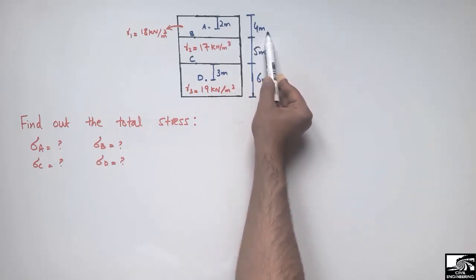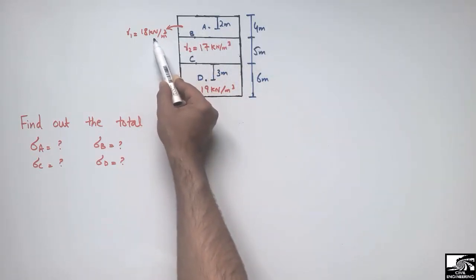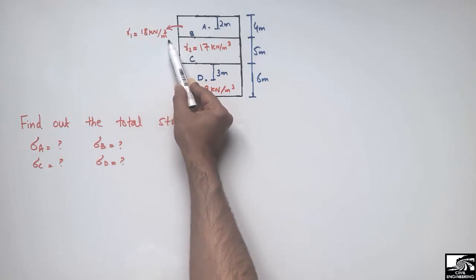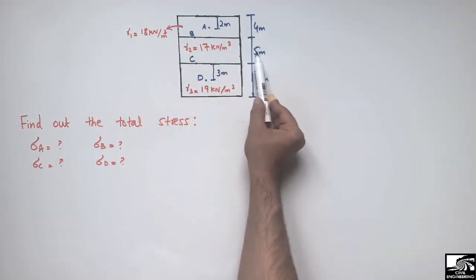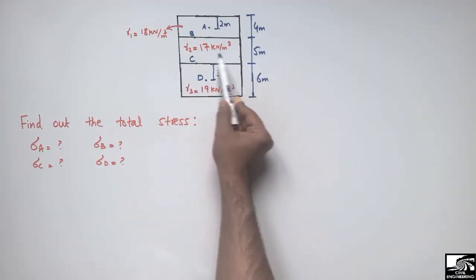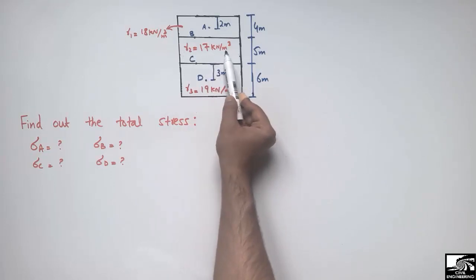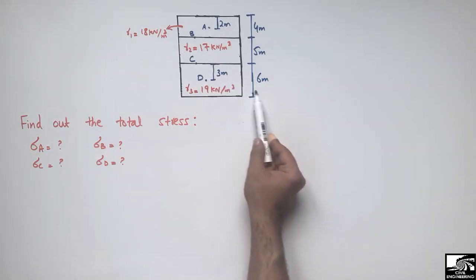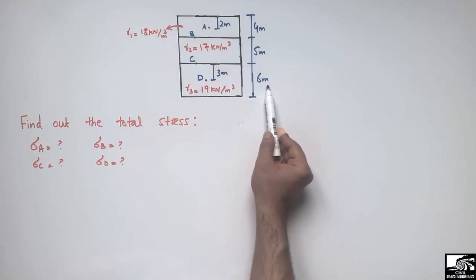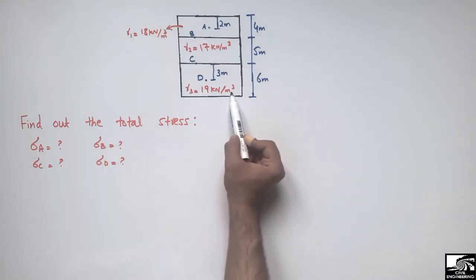The first layer has a thickness of 4 meters and a unit weight of 18 kN/m³. The second layer has a thickness of 5 meters and a unit weight of 17 kN/m³. The third layer has a thickness of 6 meters and a unit weight of 19 kN/m³.